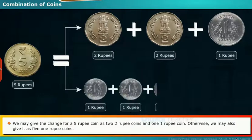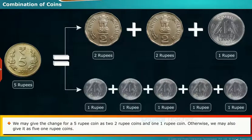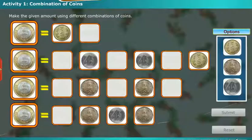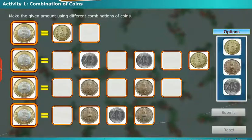We may give the change for a 5 rupee coin as 2 two-rupee coins and 1 one-rupee coin. Otherwise, we may also give it as 5 one-rupee coins. Activity 1 — Combination of Coins: Make the given amount using different combinations of coins.